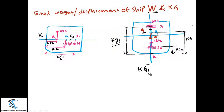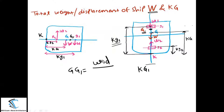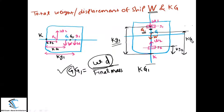If you look at the transverse view, all the weights are passing through the center line, so they are not going to generate any transverse moment. Then how do you calculate the new center of gravity? If you remember from the earlier class, when finding GG1, we took the moment generated by the addition or removal of weight from the center of gravity G, divided by the final mass.